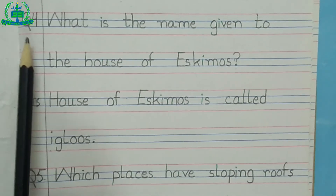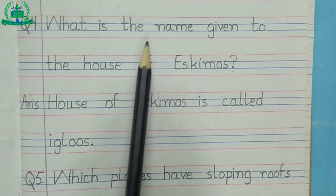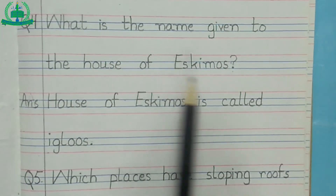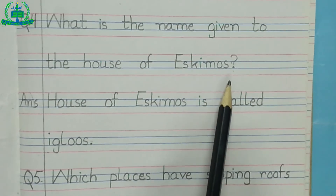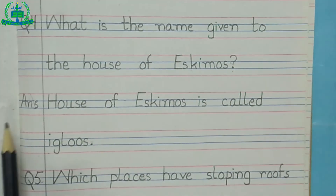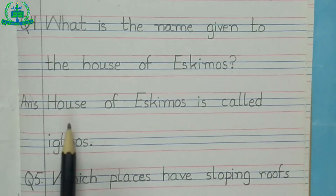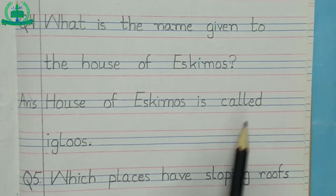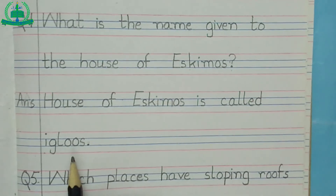Question number 4: what is the name given to the house of Eskimos? Answer is, the house of Eskimos is called igloos.